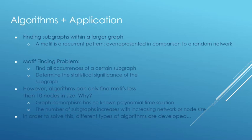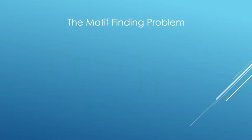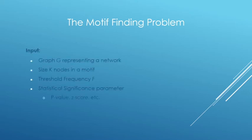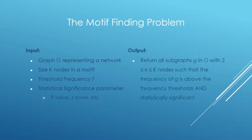So in the next few slides, we'll go over the basic steps of motif finding and how different algorithms have modified these to increase their efficiency. So to recap, this is our motif finding problem. We input a graph big G as our network wanting to find motifs up to size big K. We also pass along some frequency threshold F and also some statistical significance test. And then we want to output all the subgraphs in big G with size of up to two to big K nodes.